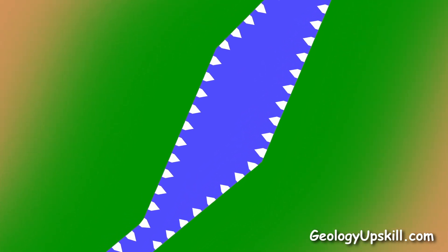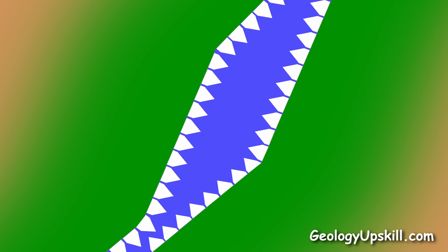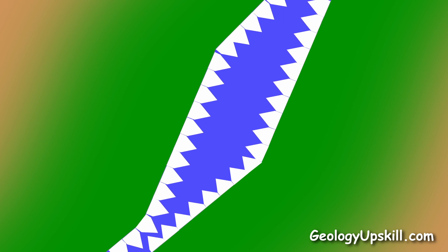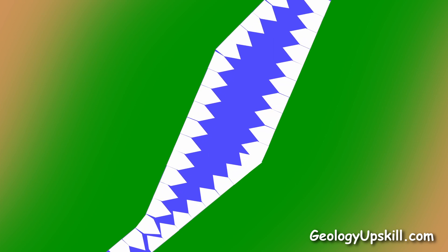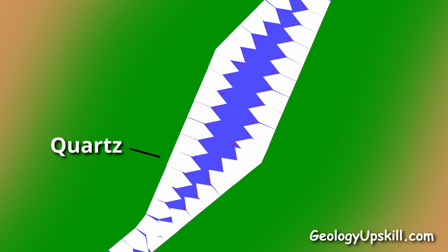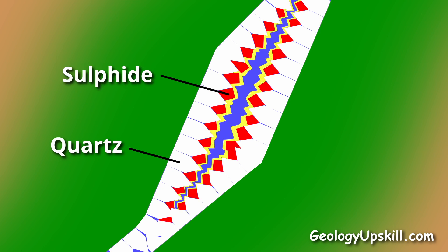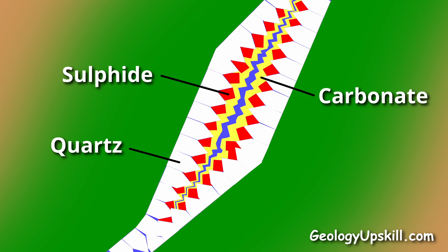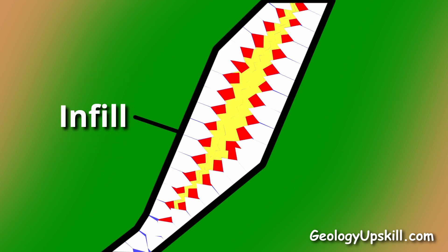As the reactions proceed and the fluid cools, other new minerals begin to precipitate from the fluid in the cavity. Quartz is usually the first, with crystals growing away from the walls of the cavity. Sulfides are usually next, and carbonate often fills the remaining space. This is the process of infill.